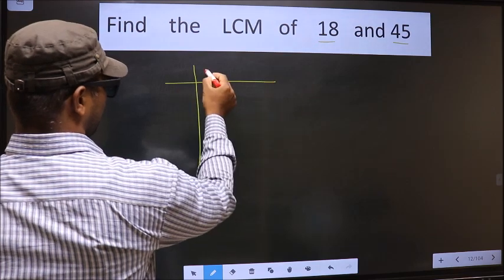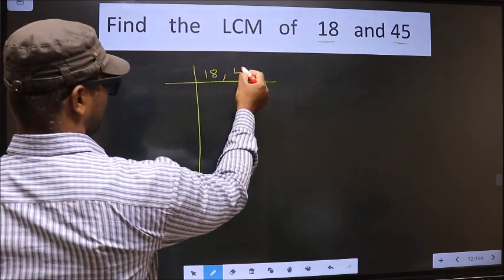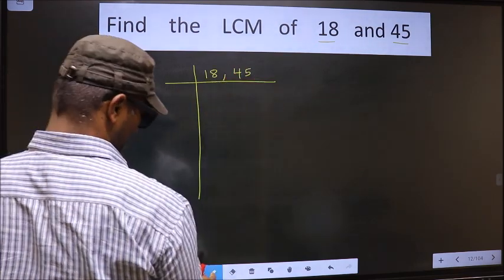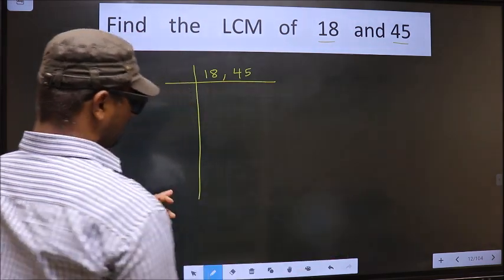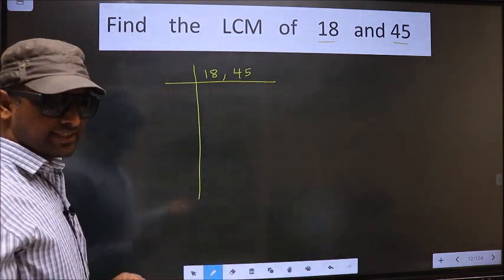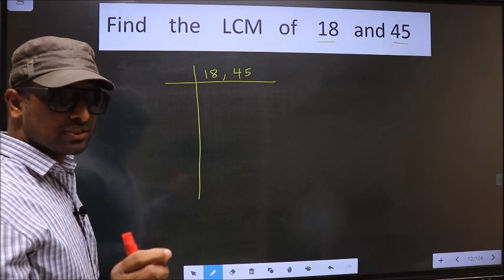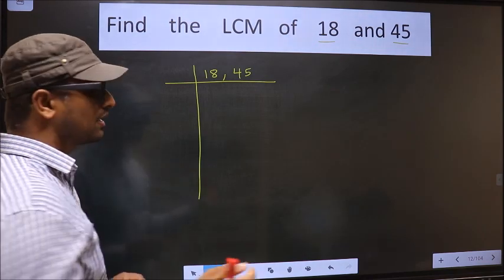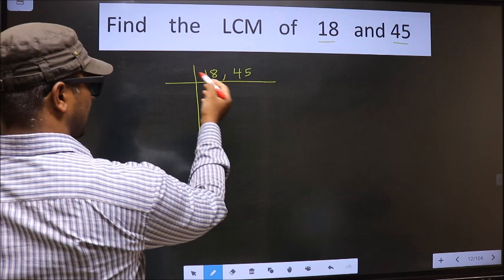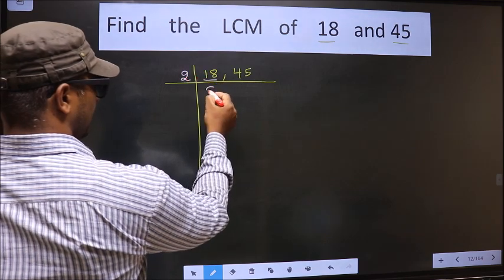That is 18, 45. Now we should focus on the first number, that is 18. 18 is 2 × 9 = 18.